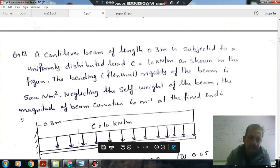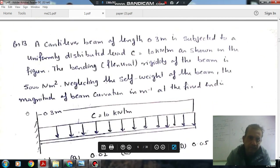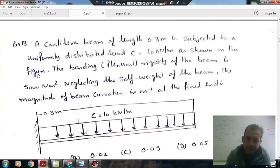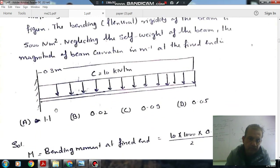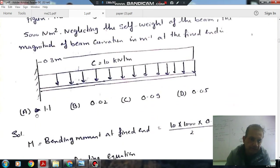Next, a cantilever beam of length 0.3 meters subjected to uniformly distributed load w equal to 10 kN per meter as shown in the figure. The bending flexibility of the beam is 5000 Nm square. Neglecting the self-weight of the beam.